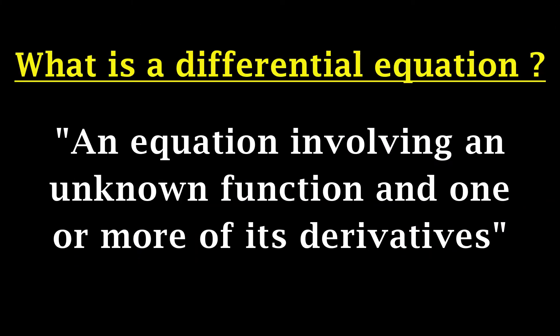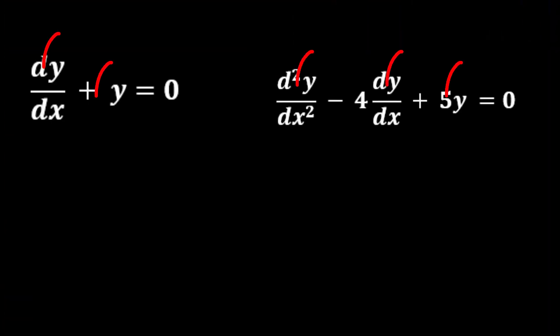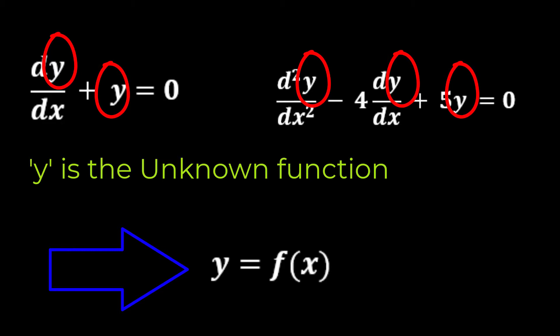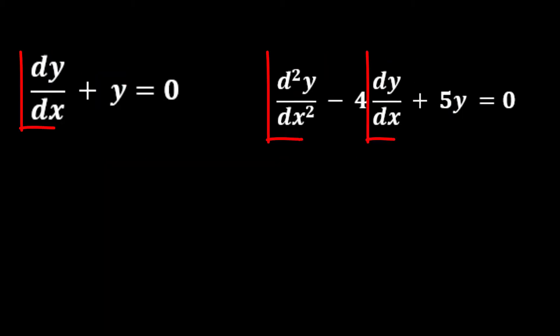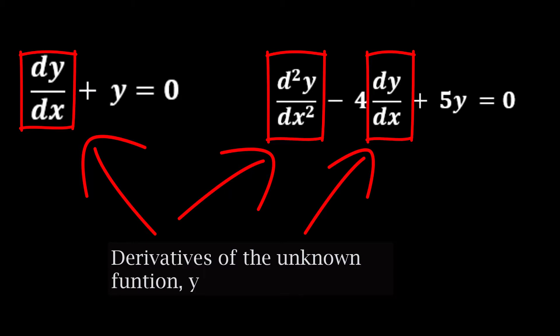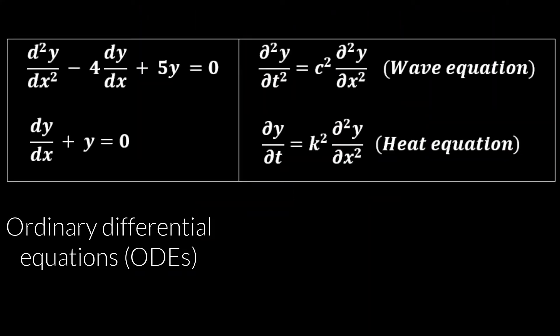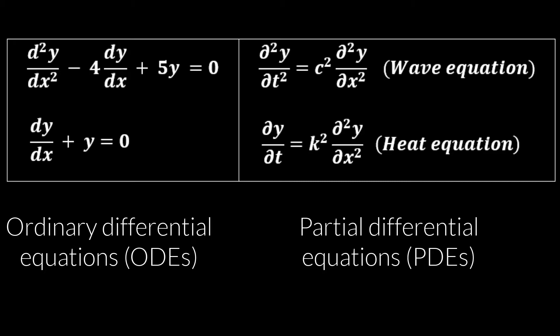If you look up the definition of a differential equation on the internet, you might find something like this: an equation involving an unknown function and one or more of its derivatives. So there are two very specific features for any differential equation. One, it involves some unknown, and in this case the unknown is a function, not just a value. And it also involves one or more derivatives of this unknown function with respect to some independent variable. The derivatives can be ordinary derivatives or partial derivatives, which leads to two different types of differential equations: the ordinary differential equations or ODEs, and the partial differential equations, which we also call PDEs.